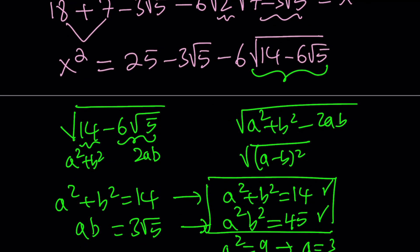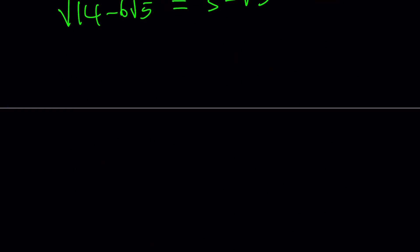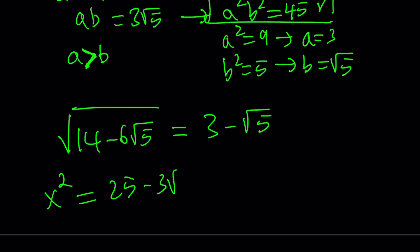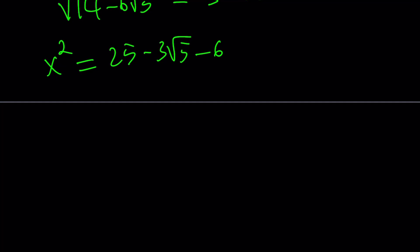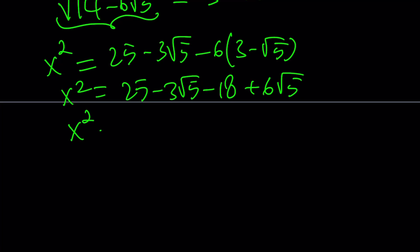Let's go ahead and plug it in to find x. So x squared equals 25 minus 3 root 5, and then minus 6 times the expression 3 minus root 5. Distributing gives us 25 minus 3 root 5 minus 18 plus 6 root 5. Simplifying: 25 minus 18 is 7, and negative 3 root 5 plus 6 root 5 is positive 3 root 5.